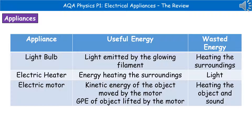The light bulb: its useful energy will be the light that's emitted by the glowing filament, but the wasted energy is any that's being transferred to heat the surroundings. If we think about the electric heater, its whole purpose is to heat the surroundings, so that energy is the useful. But if the bars are glowing in order to do that, that light is wasted energy.